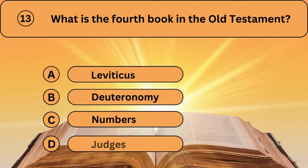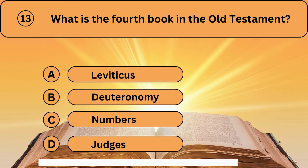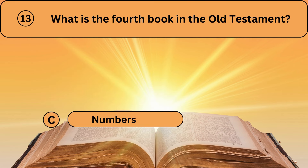Question thirteen. What is the fourth book in the Old Testament? A. Leviticus. B. Deuteronomy. C. Numbers. D. Judges. Numbers is the correct answer.